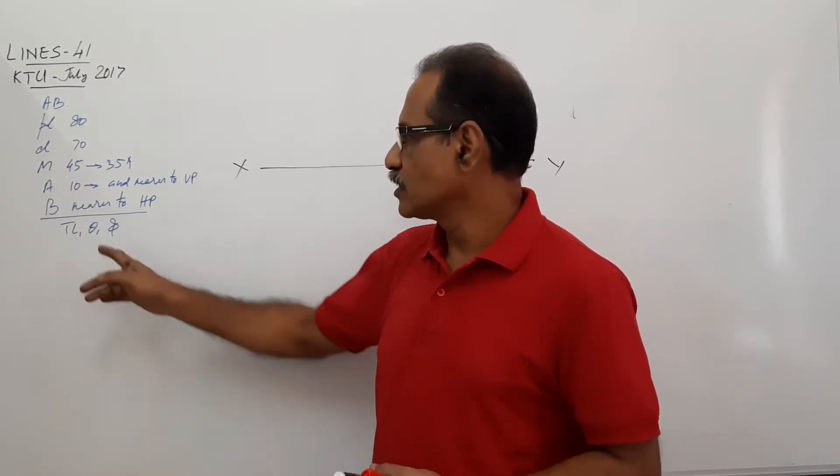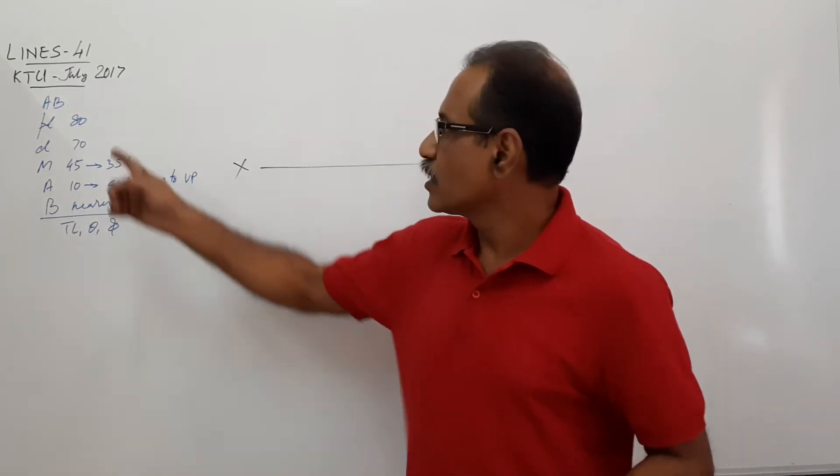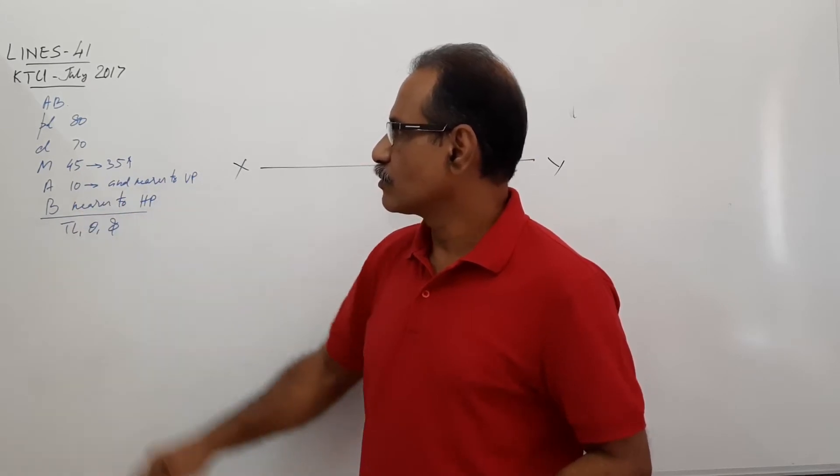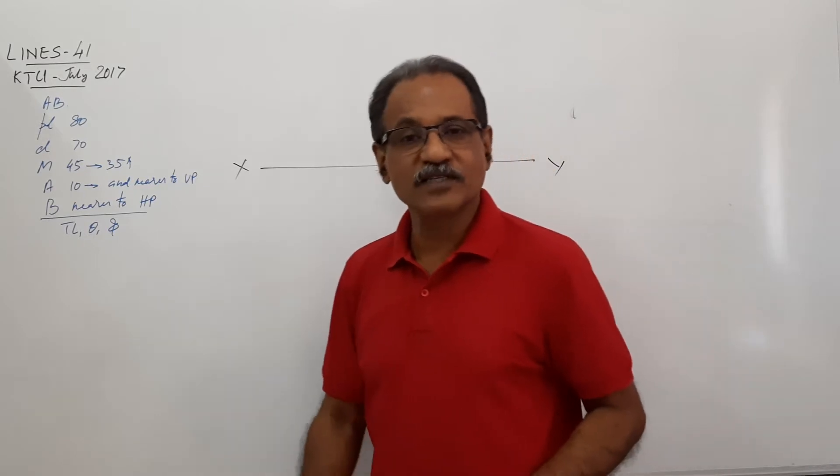This is additional information. You are asked to draw the projections and find out true length theta and phi. 1, 2, 3, 4, 5. There are 5 informations given sufficiently.